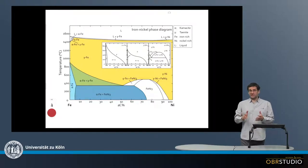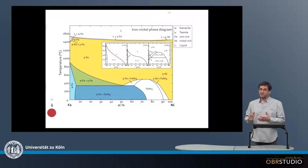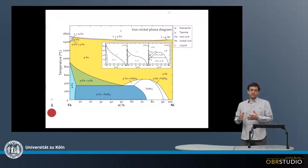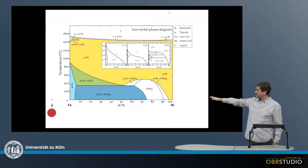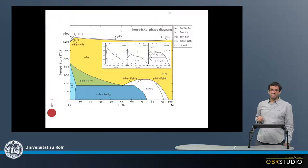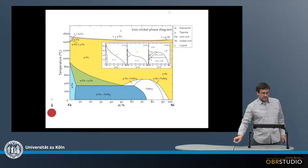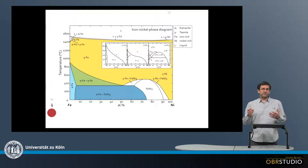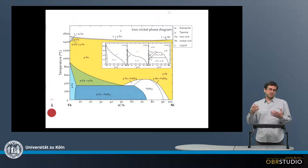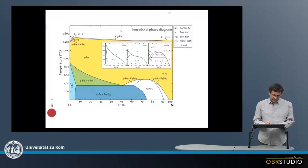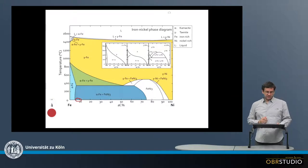To understand what phases iron and nickel produce and what the metal looks like in primitive chondrites and the cores of asteroids, it's helpful to look at the iron-nickel phase diagram shown here. Iron has an abundance about an order of magnitude higher than nickel, which means the interesting range is something like here, with about 90 plus weight percent iron and the rest nickel.